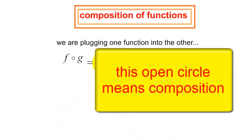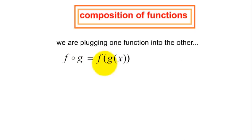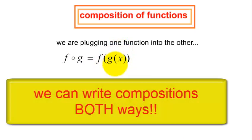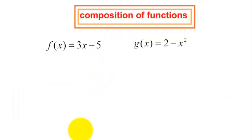Another way to write this would be f of g of x. I will find g at x and plug that into the f function. I have given you two functions: f of x is equal to 3x minus 5, and g of x is equal to 2 minus x squared.